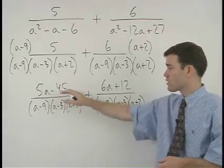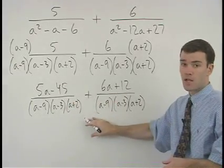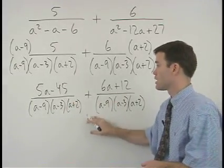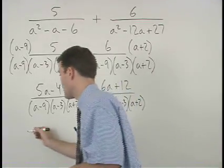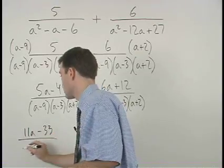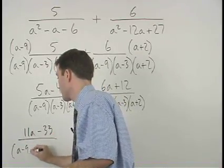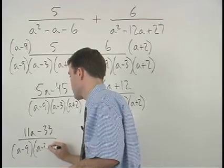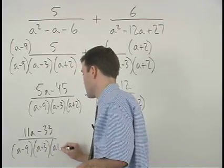Next, add across the numerators but leave the denominator the same to get (11a minus 33) over (a minus 9)(a minus 3)(a plus 2).